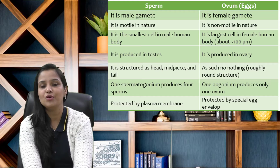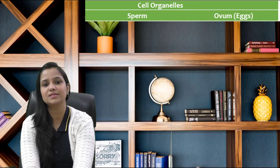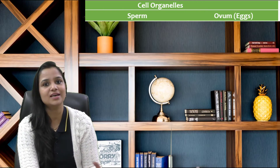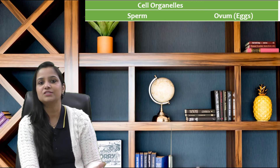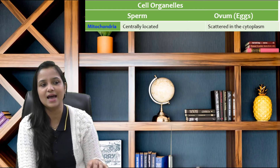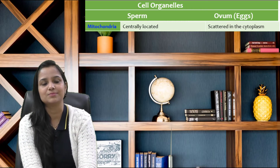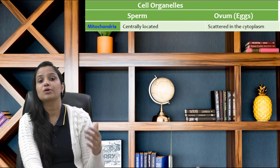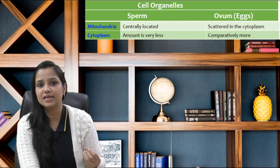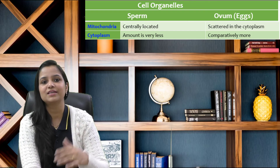Now there are a few important cell organelles which are present or absent in both sperms and ovum, and we will see their location as well. First, mitochondria: in sperm it is centrally located, and in the case of ovum it is scattered in the cytoplasm. Regarding cytoplasm, the amount is very less in a sperm, and in the case of ovum it is comparatively high.